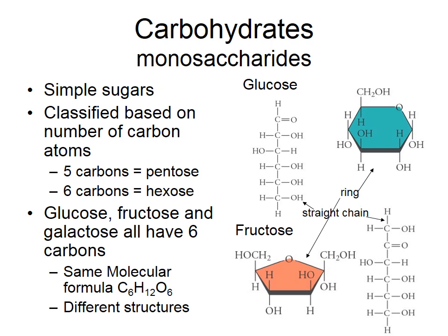Monosaccharides, or simple sugars, are classified as pentoses (five carbons) or hexoses (six carbons). Glucose and fructose are both hexoses with the same molecular formula, C6H12O6, but different structures. Our body can tell the difference — we regulate blood glucose levels, not blood fructose levels, though we can convert between the two.